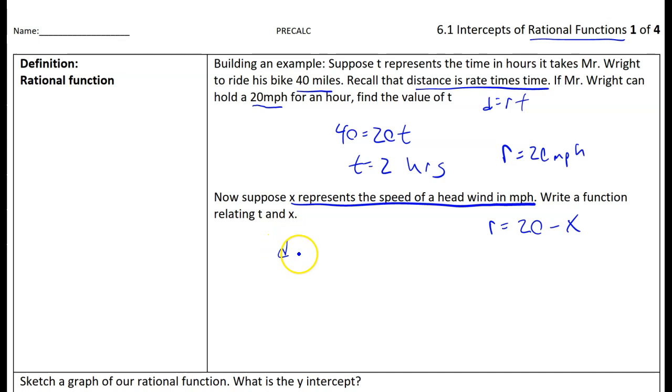My formula then becomes distance equals rate times time. But my rate is 20 minus x, my distance is 40. So here we have a function relating t and x. I'm going to divide both sides by this 20 minus x term, and here now is my rational function.